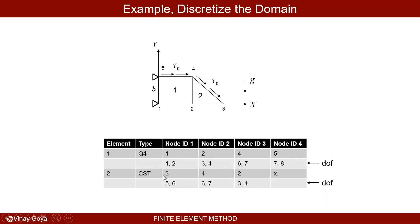From there, I need to calculate the degrees of freedom at each node, because I have two degrees of freedom per node. When working on heat transfer problems that was less of a concern, but now there are multiple degrees of freedom per node. Node one has DOFs one and two; node two has DOFs three and four; node four has DOFs six and seven; node five has DOFs seven and eight.